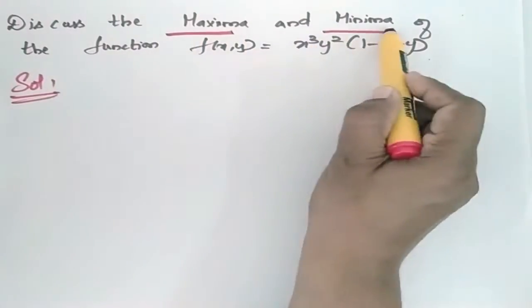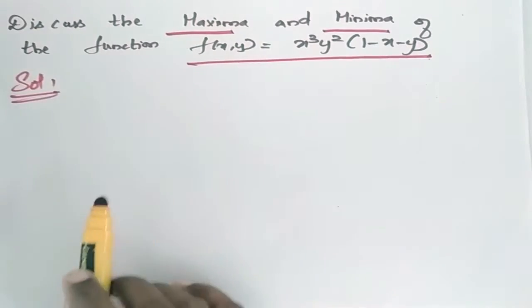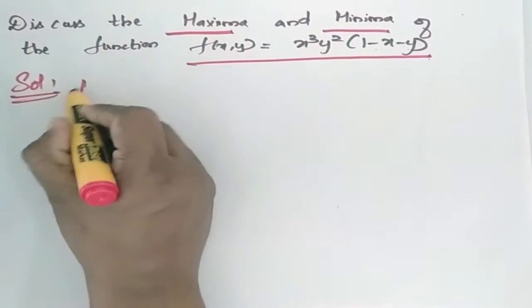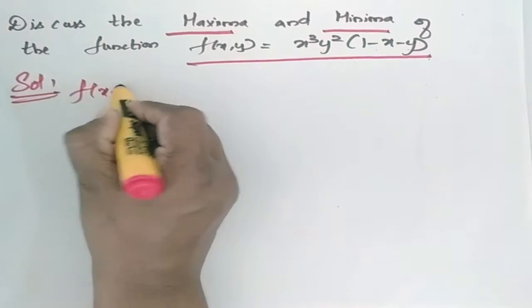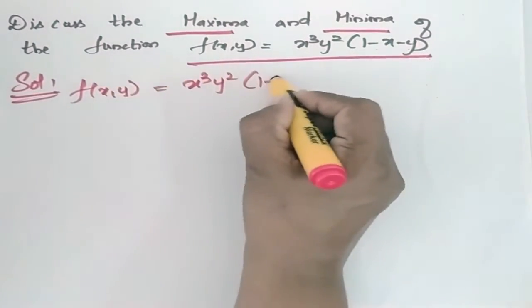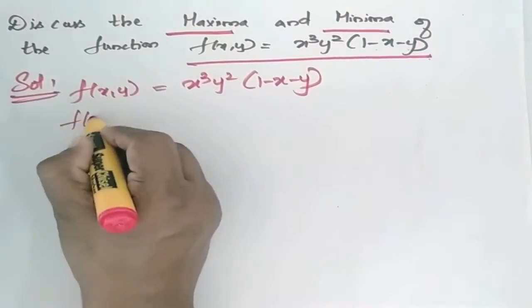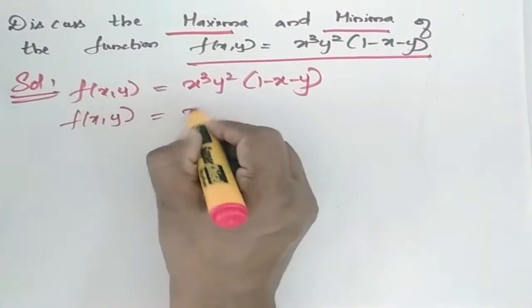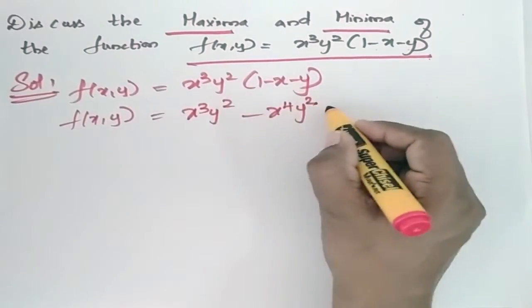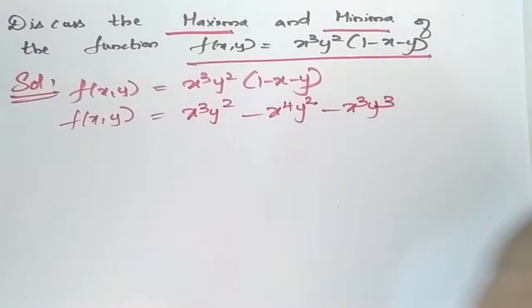Discuss the maximum and minima of function f(x, y) = x³y²(1 - x - y). So f(x, y) = x³y² - x⁴y² - x³y³.